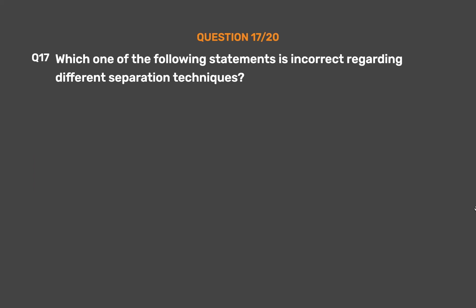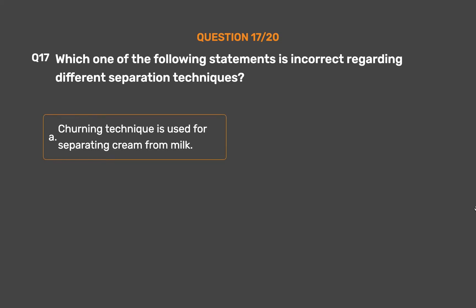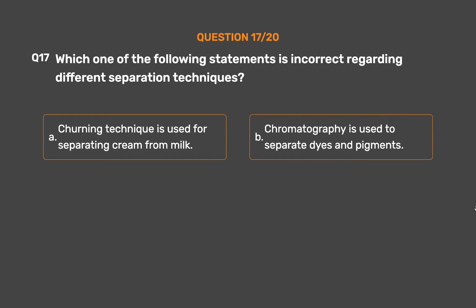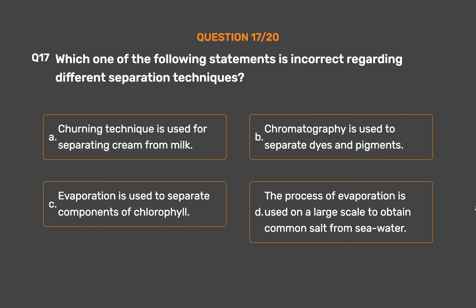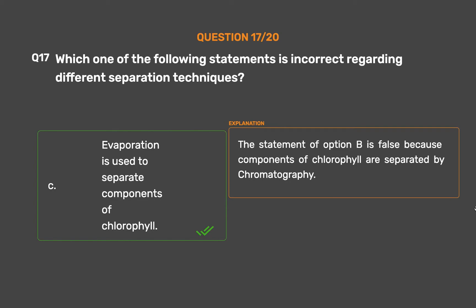Question number 17. Which one of the following statements is incorrect regarding different separation techniques? Option A: Churning is used for separating cream from milk. Option B: Chromatography is used to separate dyes and pigments. Option C: Evaporation is used to separate components of chlorophyll. Option D: Evaporation is used on a large scale to obtain common salt from seawater. The correct answer is Option C. That statement is false because components of chlorophyll are separated by chromatography, not evaporation.